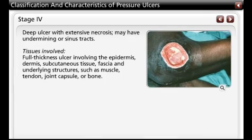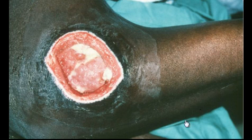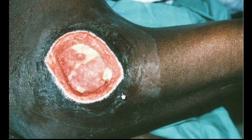A Stage 4 pressure ulcer involves full thickness tissue loss with exposed bone, tendon, or muscle. Slough or eschar may be present on some parts of the wound bed. A Stage 4 pressure ulcer often involves undermining and tunneling.